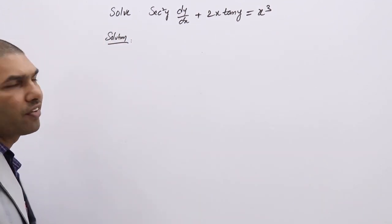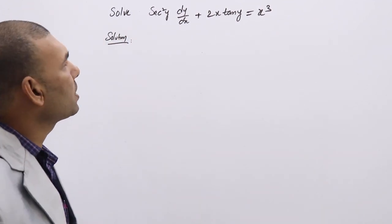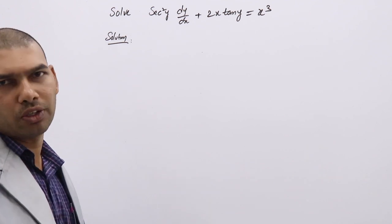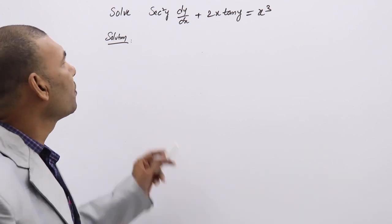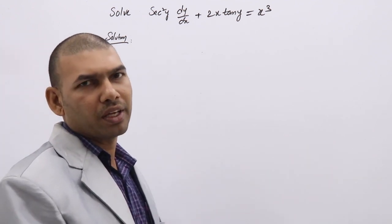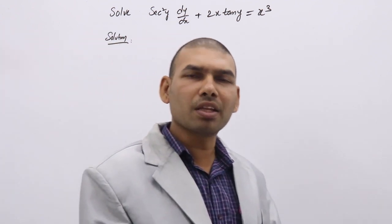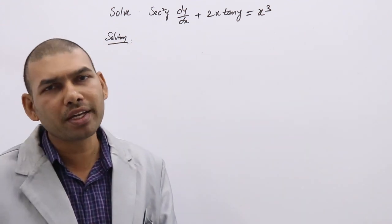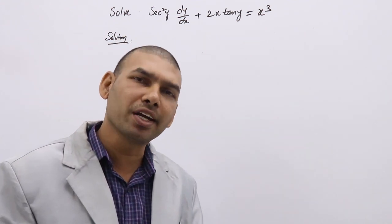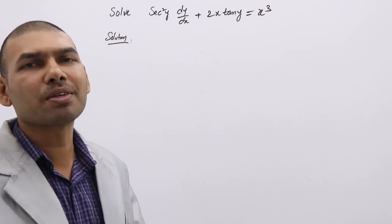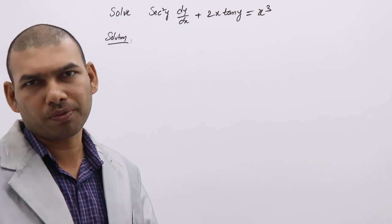Solve sec²y (dy/dx) + 2x·tan y = x³. If you see these types of differential equations, they may appear to be in the form of a linear DE, but they are not linear. They can be reducible to linear by simple substitution.